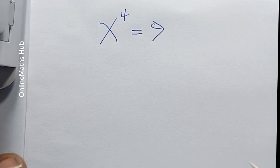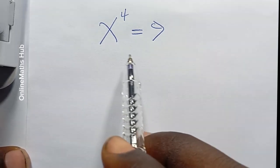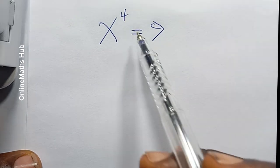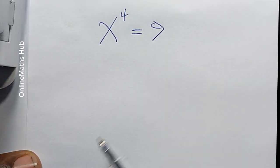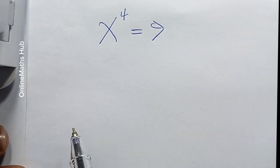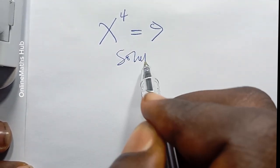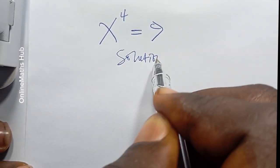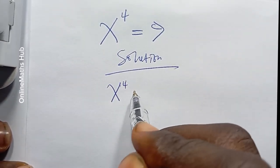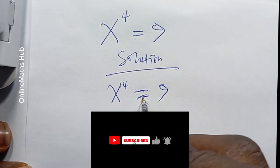Hello friends, welcome back. We're going to be solving this equation over here, which is x to the power 4 is equal to 9. Let me just write 'solution' and of course this is x power 4 is equal to 9.